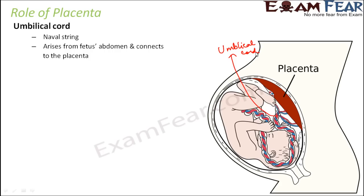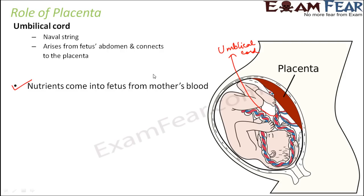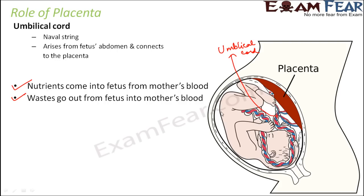The important functions of placenta: first, it helps provide nutrients to the fetus from the mother's blood — it carries all the good things into the fetus. It also takes away all the wastes from the fetus into the mother's blood, because this baby is caged inside the uterus. The mother can then excrete out those waste products through her excretory system. So all wastes inside the fetus are sent to the mother's blood through the placenta, and the mother's excretory system handles them.